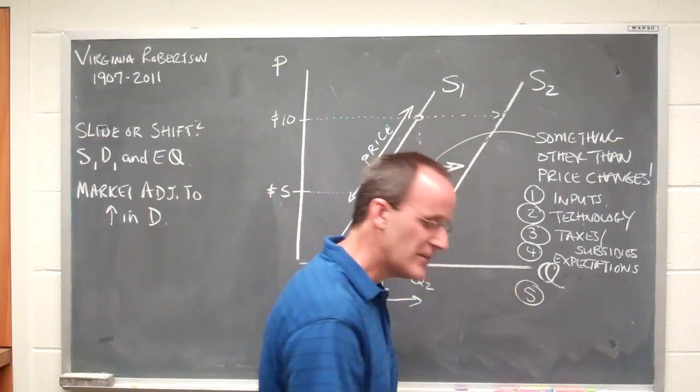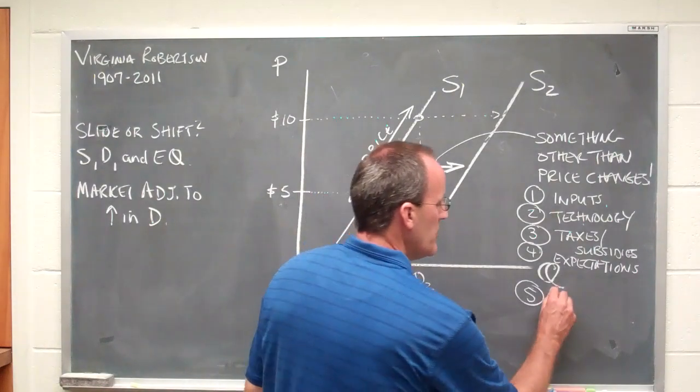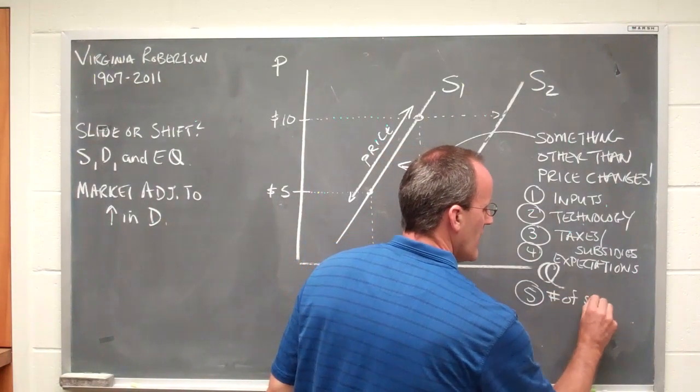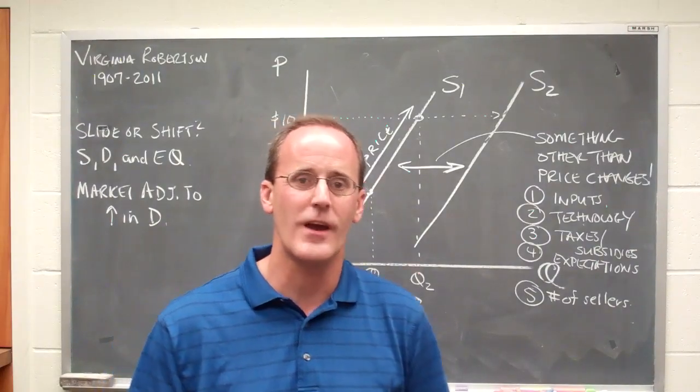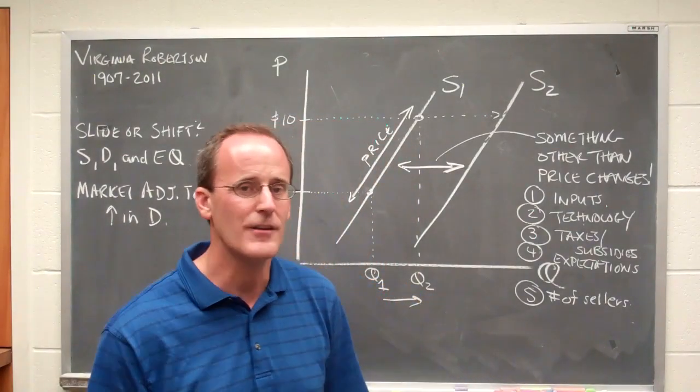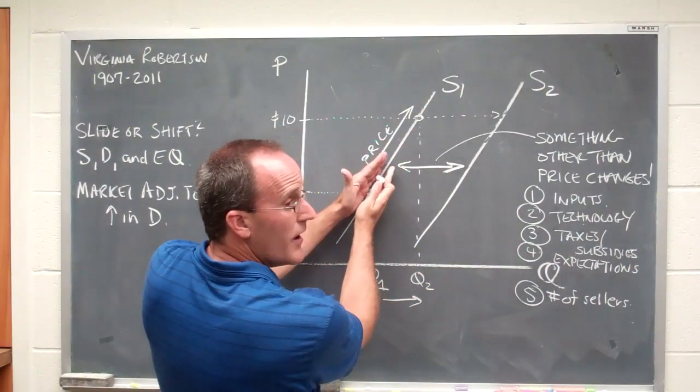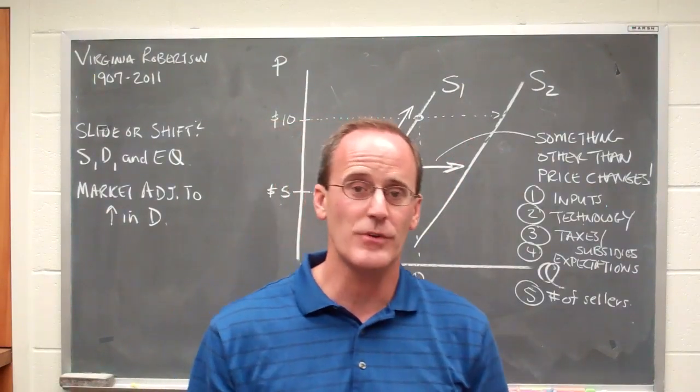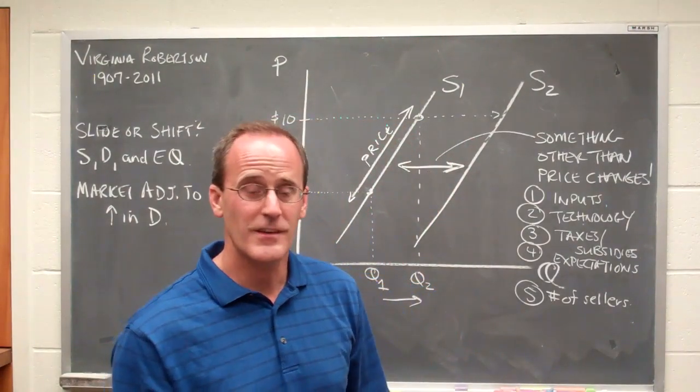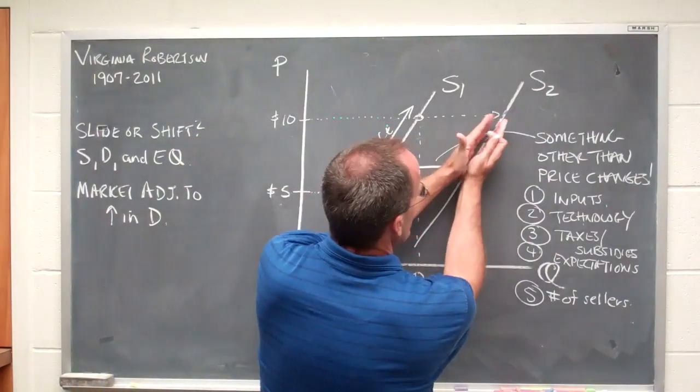And then there's number five right here, which is our last idea. This is also the same idea we talked about on the demand side. That would be the number of sellers. So how many businesses are actually out there producing the item? And when you have a large number of sellers, what we would simply say is the overall supply in the marketplace increases. And if certain businesses were to go out of business or simply decide to relocate from a particular area, then the supply would contract.